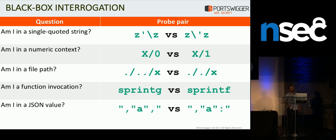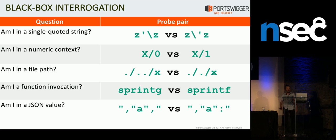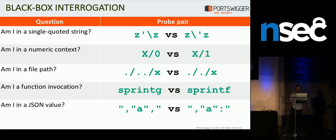You can do even cooler stuff like asking: is this input being embedded in a JSON string, by injecting something that breaks the JSON structure and something that doesn't? This is just a tiny sample of the number of questions you can ask. And if you can think of a vulnerability that you can express as a probe pair like one of these, because I've implemented this in an open source extension, you can add that yourself — it takes roughly five lines of code. So give it a go.